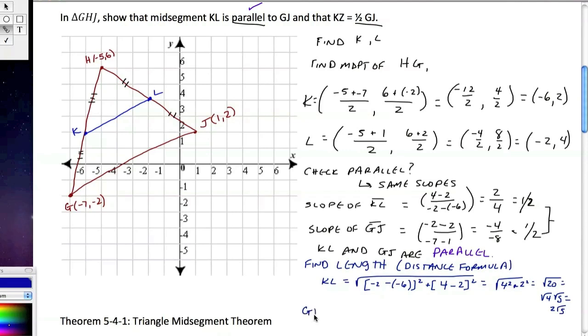So GJ is going to be square root of - we've got our points here - 1 minus negative 7 squared, plus 2 minus negative 2 squared. Don't be afraid to look at your formula. We want to try to learn this, but it's okay if you have to look back at it. Negative operations here. 1 minus negative 7 would be 1 plus 7, so that's 8 squared, plus -